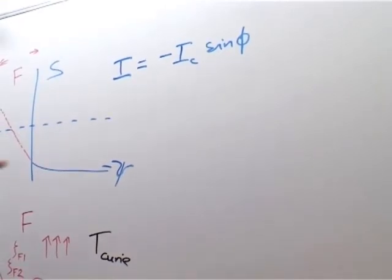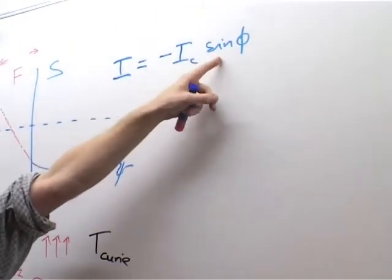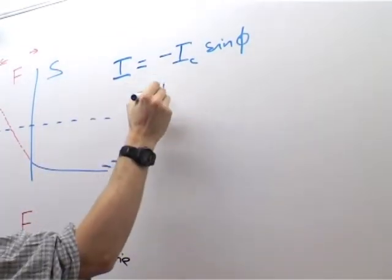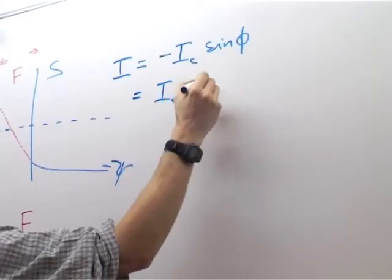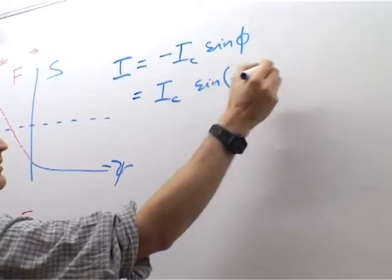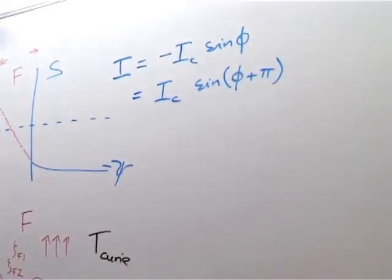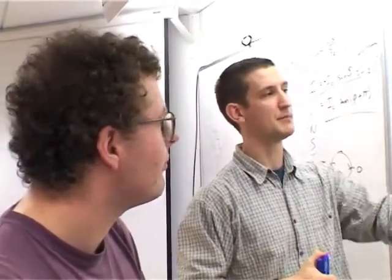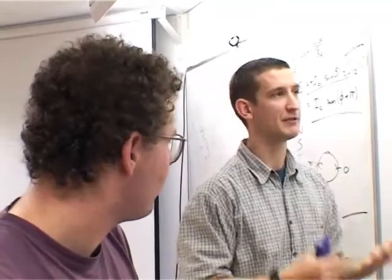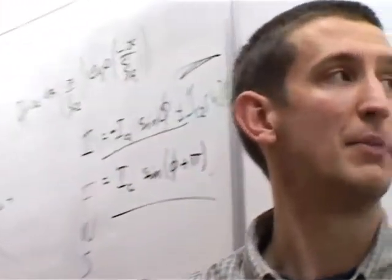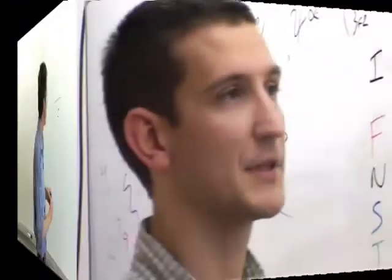Now, if we assume this sinusoidal relationship, we can just write this instead as something with a positive critical current, but with the phase shifted by π. So it's like the junction has actually built in a permanent π phase shift. Yes, so the ground state, the minimum free energy, the ground state of this junction, is something with a built-in π phase difference between these two electrodes.